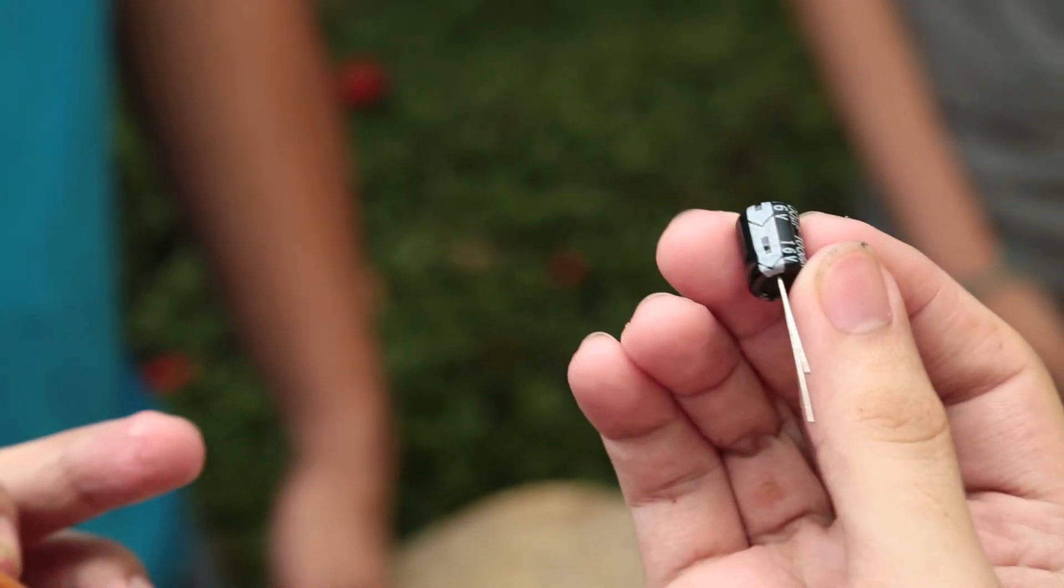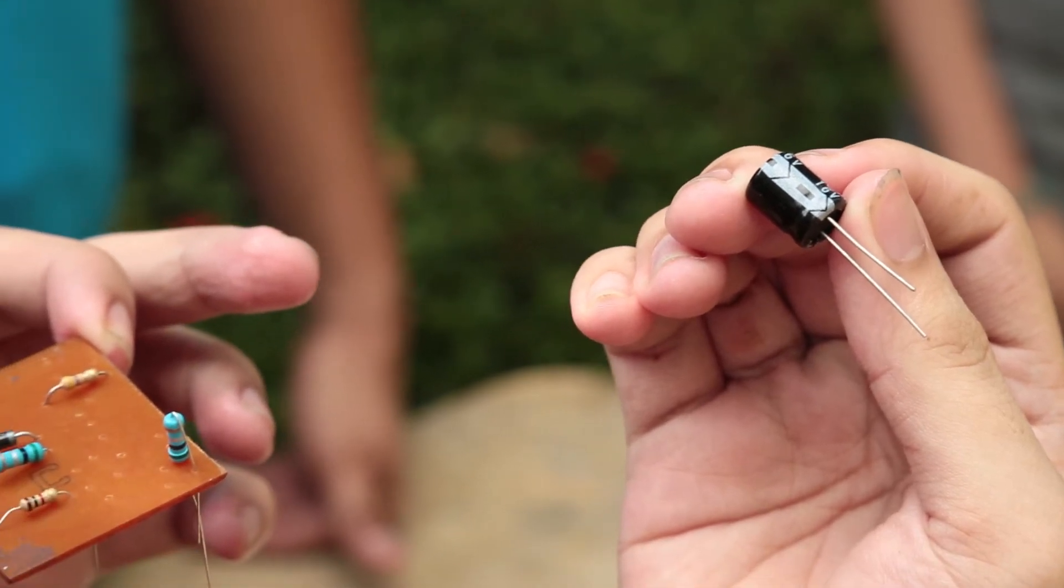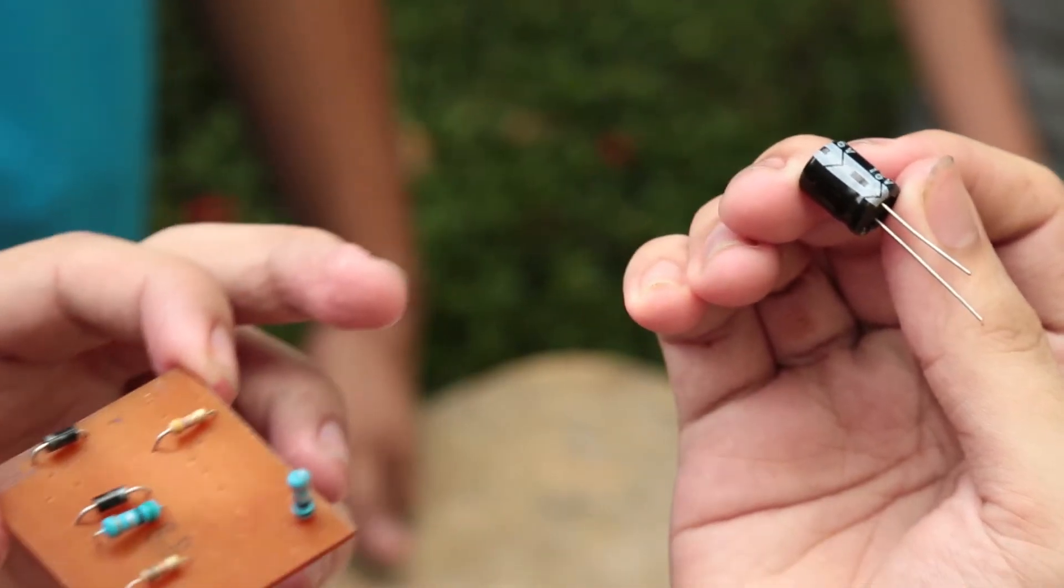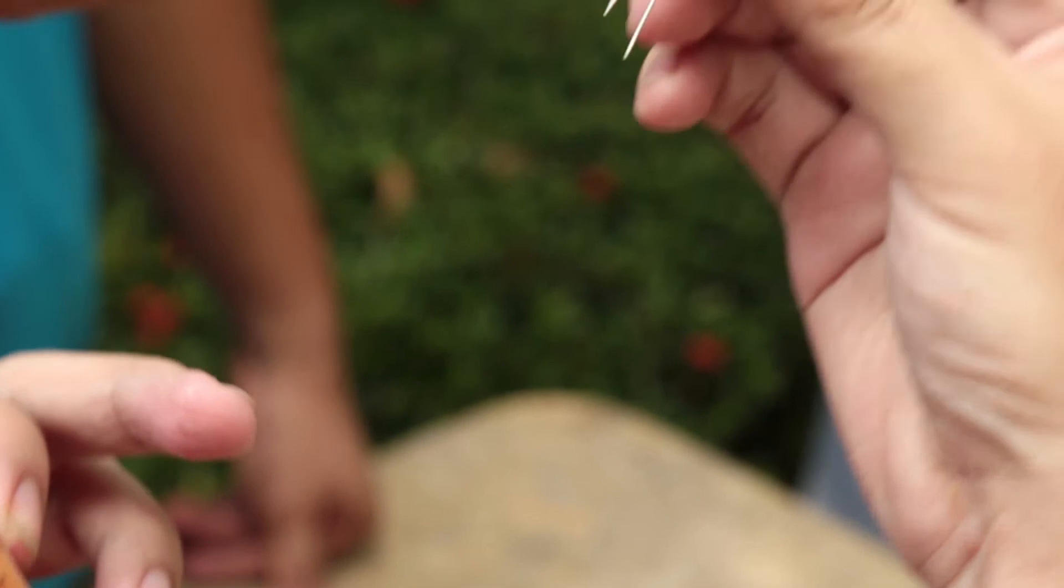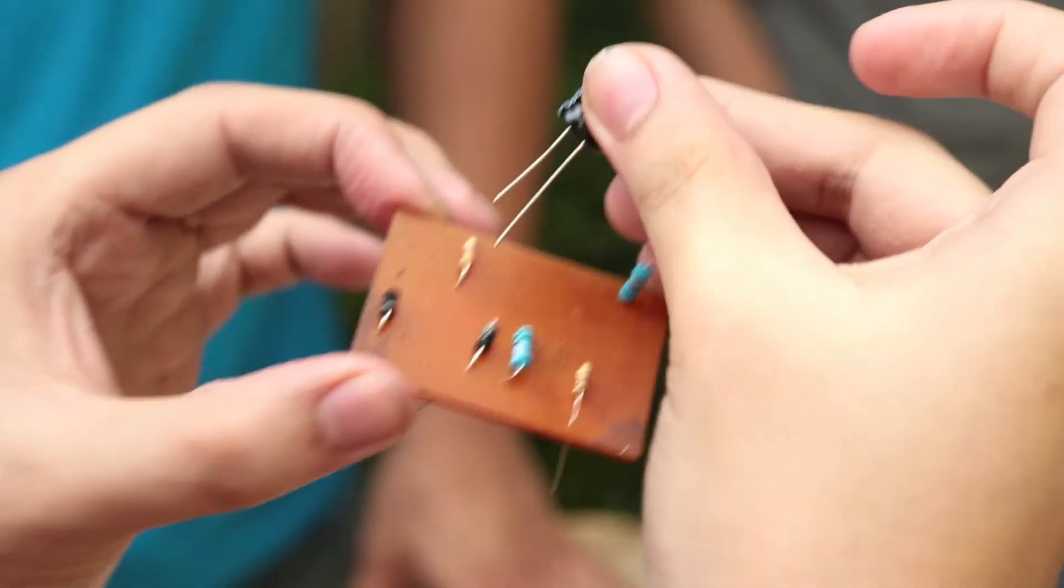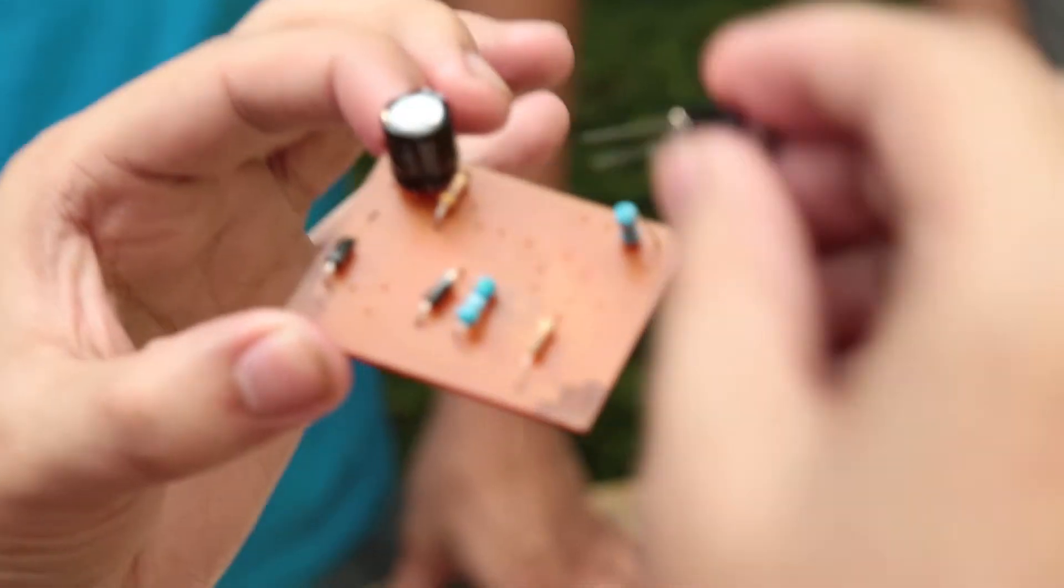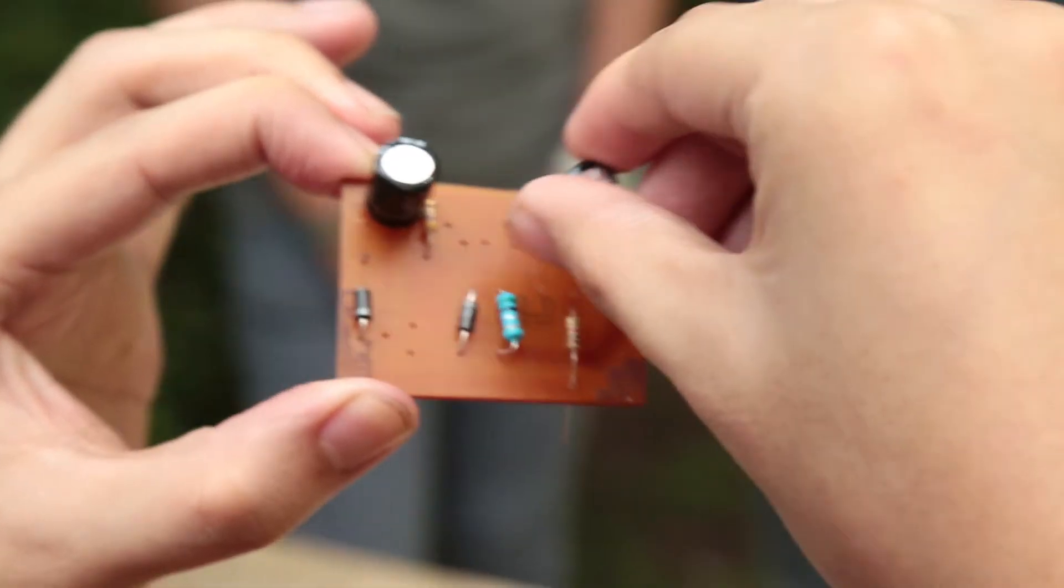These are called electrolytic capacitors, meaning they have polarity. You must only insert them in a certain orientation. The longer leg represents the positive terminal and the shorter leg represents the negative terminal. That's how we're going to do it.